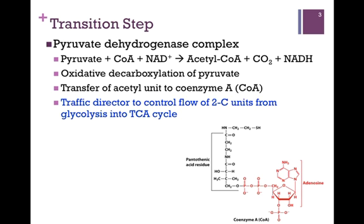Let's take a brief look at that transition step that feeds into this cyclic pathway. It is catalyzed by a complex of enzymes known as the pyruvate dehydrogenase complex, which we'll look at in greater detail in the next lesson. In this transition step, we are oxidatively decarboxylating pyruvate to acetyl, and then we transfer that acetyl unit to coenzyme A or CoA. So our substrate is pyruvate and our main product is acetyl-CoA. The structure of coenzyme A is shown on the bottom right of the screen, and the A comes from the fact that an adenosine nucleotide is a portion of that coenzyme.